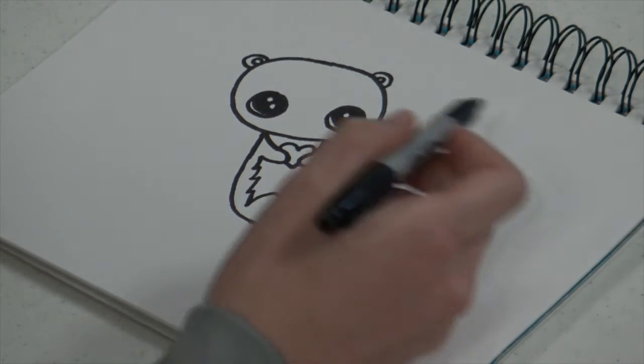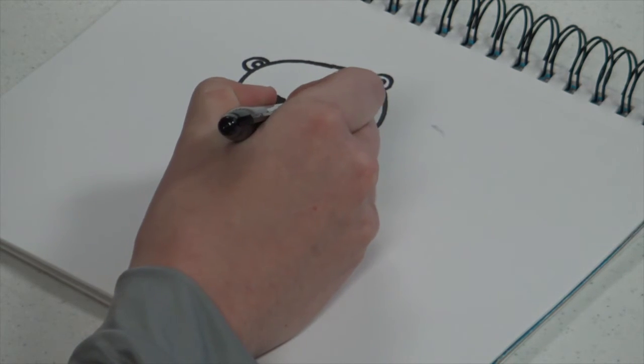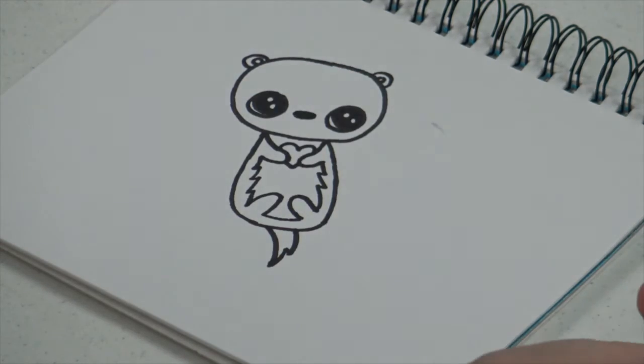Then you're gonna add the nose by drawing a thin oval shape between the two eyes. Then pointing it at the bottom by drawing a triangle shape.